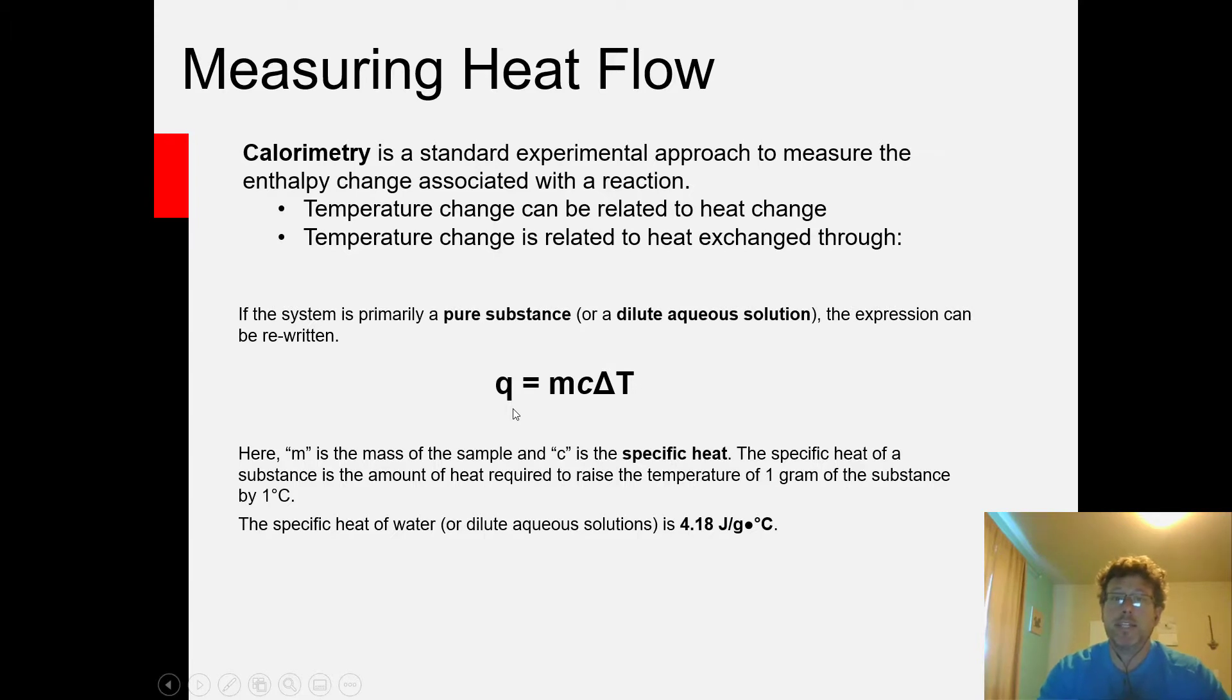What we're going to do next is look at a couple of examples where we use the calorimetry equation in conjunction with data from calorimetry experiments to calculate things like the total amount of heat exchanged as a result of a chemical reaction, or use the total amount of heat exchanged as a metal cools in a calorimeter to determine the specific heat of the metal. I'll see you back here for those in a few minutes. Thanks so much.